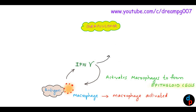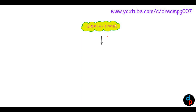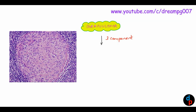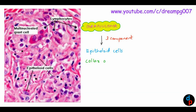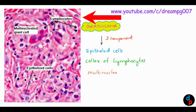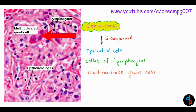Another important function of the cytokine interferon gamma is to activate CD4+ helper T cells. So basically, granuloma has three components: epithelioid cells, which are formed from the macrophages; a collar of lymphocytes, which are CD4+ helper T cells; and the multinucleated giant cells.